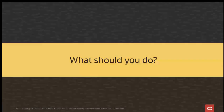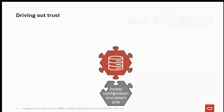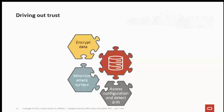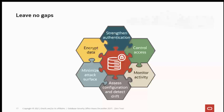From a database standpoint, driving out trust is really not that much different from the way we always talk about securing a database — it's just a slightly different slant. We're going to look at our database configuration and make sure we're configured well. We're going to take steps to minimize the attack surface, encrypt our data at rest and in motion, move towards the strongest authentication we can manage without paralyzing operations, control access to data, and monitor activity in our database. Here's the key thing: you have to do it all. If you leave out one piece of this puzzle, you leave the bad guys an open path into your database.